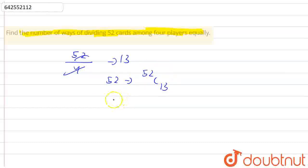Now, for the second player, we are left with only 39 cards, so we can give him 13 cards from 39. For the third player, we are left with 26 cards, so we can give 13 cards from 26. For the last player, we are left with 13 cards, so 13 cards from 13.